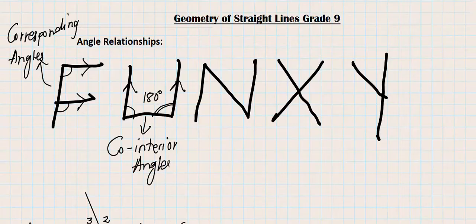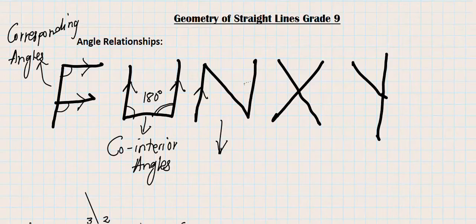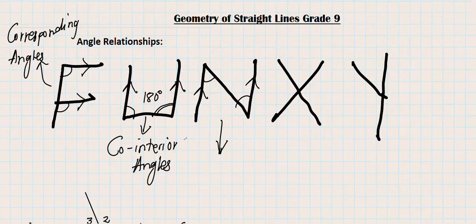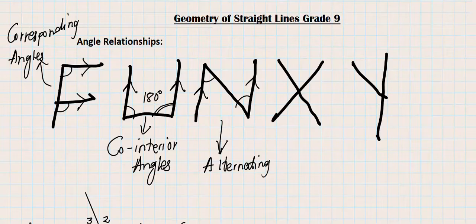Then we have the N shape — also called the Z shape — which also requires parallel lines. We look at the armpits of the N shape; the angles formed there are also equal. We refer to these as alternating angles.